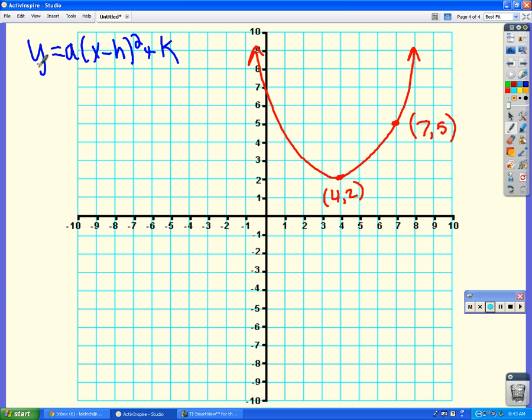So in this equation, aside from the a, there are one, two, three, four letters, variables. On our graph we have, wait for it, one, two, three, four numbers. Is that a coincidence? Definitely not. So we're going to take those numbers, plug them in for the variables, and then solve for the one variable that's left, and then we'll be good to go. Right, this is the vertex form of the parabola.